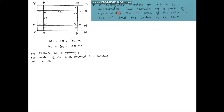It is given that this garden is surrounded from outside by a path of equal width. We don't know the width of that path, so let it be x. That is, the width of the path around the garden is x meters.